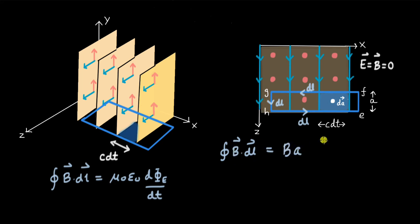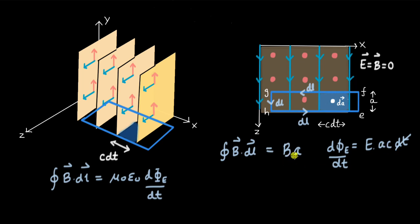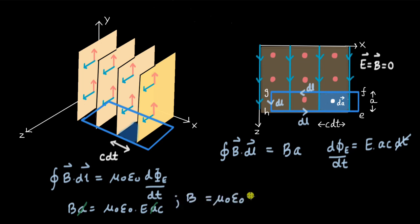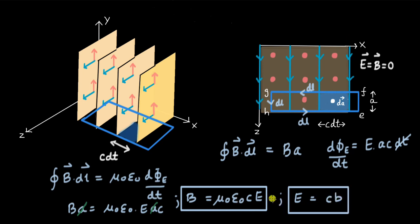The change in electric flux dΦ equals E times the swept area a·c·dt, so the rate of change of electric flux is E·a·c. Placing these into Ampere's law: B·a = μ₀ε₀·E·a·c. Cancelling a, we get B = μ₀ε₀·c·E. Comparing this with the result from Faraday's law (E = cB), we can write E = (1/(μ₀ε₀·c))·B.